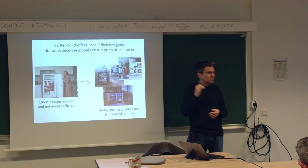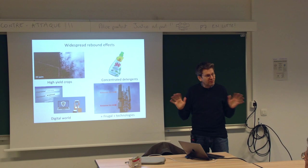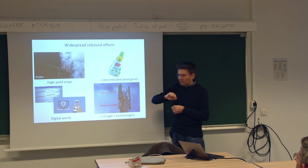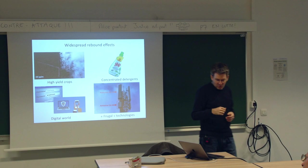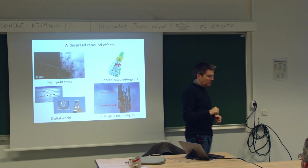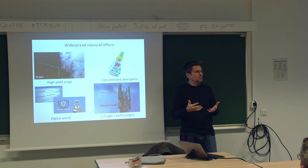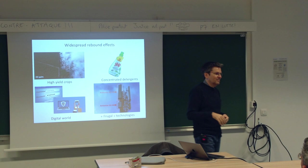There's a rebound effect for fridges, but also for anything — coal, petrol, concentrated detergent, 5G, the digital world. Even palm oil: you grow crops that are more efficient per square meter, produce more oil, more calories. Initially people said this would avoid deforestation because you increase yield per square meter — Norman Borlaug's theory. You know what happened: this actually increased deforestation. Typical rebound effect — because it's so productive, it's more attractive, we plant even more, we create new needs, and then we consume even more. Rebound effect, very prevalent.